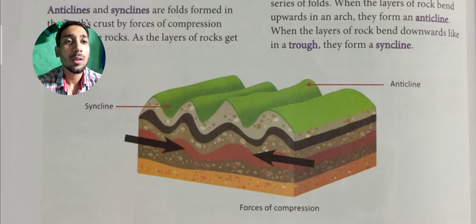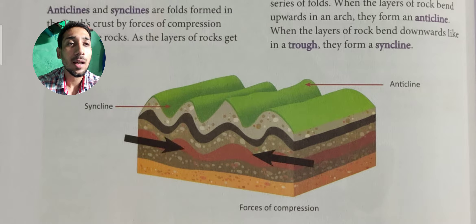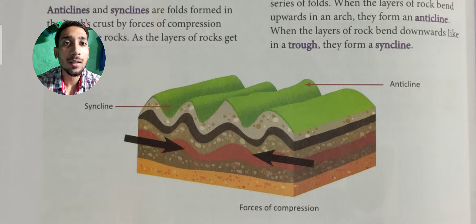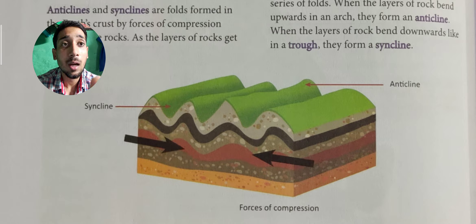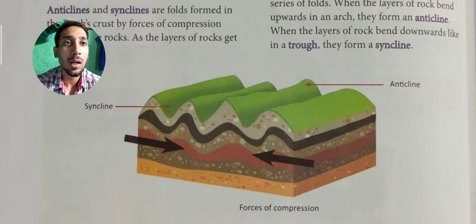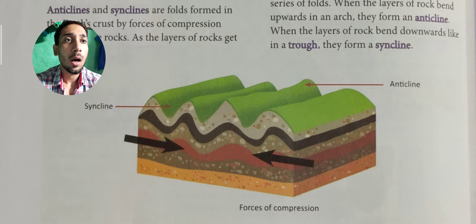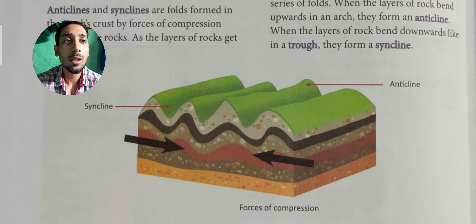As you can see in the diagram, the upward arch is called anticline and the downward arch is called syncline. Remember: the upward bending position is called an 'arch' and the downward bending position is called a 'throw.' Don't use 'arch' for both — the upward is arch and the downward is throw.